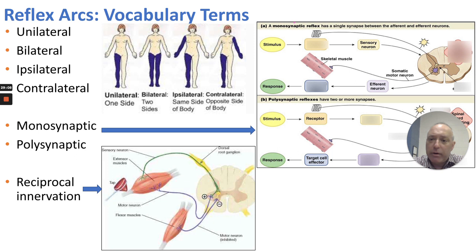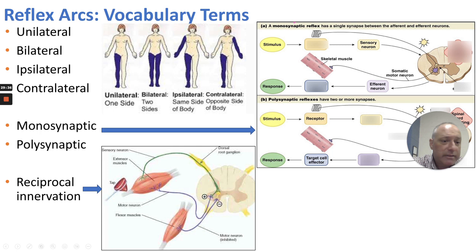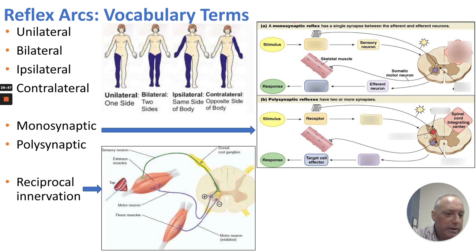Some important vocabulary: unilateral means on one side; bilateral means on both sides; ipsilateral means two body parts on the same side; contralateral means two body parts on different sides. A monosynaptic reflex has a single synapse between the afferent and efferent neurons — stimulus, sensory afferent, motor efferent, and response. A polysynaptic reflex has two or more synapses in the gray matter integration center, which could activate a withdrawal response to another target organ. Reciprocal innervation means an afferent sensory neuron enters the integration center and can synapse with inhibitory interneurons to inhibit antagonistic muscles while activating agonistic muscles, depending on what the reflex requires.